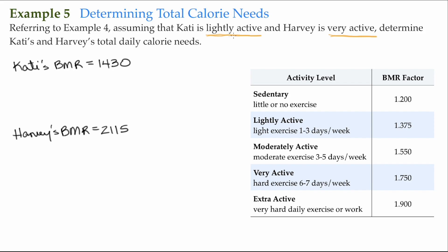Katie is lightly active. According to this chart, we have different activity levels and multipliers. These multipliers help determine how many more calories we need based on our activity level in order to maintain our weight. Since Katie is lightly active, we multiply her BMR by 1.375. So Katie's total calorie needs throughout the day would be about 1,966.25 calories to maintain her weight from day to day.